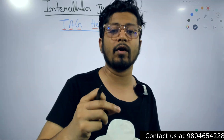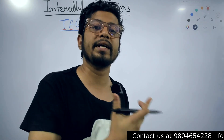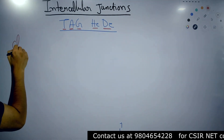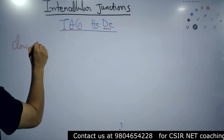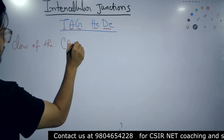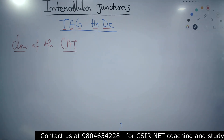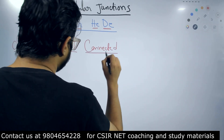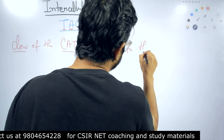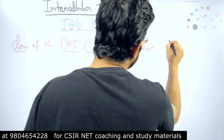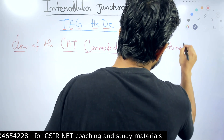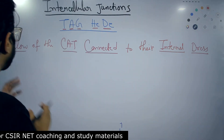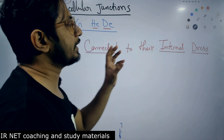The second thing you need to remember is the names of the proteins involved with each intercellular junction. For that I have this mnemonic — let me write it down: 'Claw of the CAT, connected to their internal dress.' CLAW and CAT are capitalized, and 'connected' is underlined.